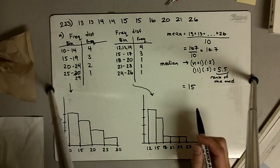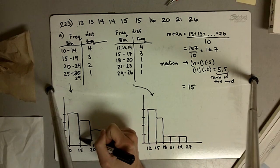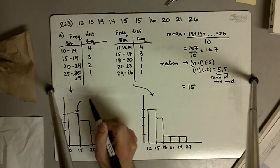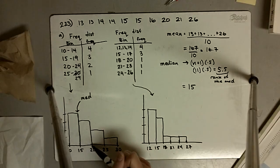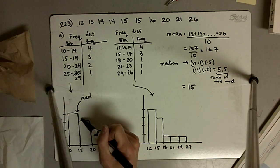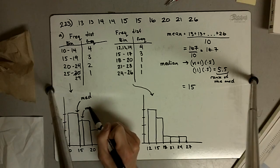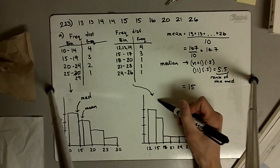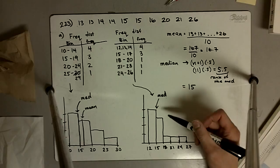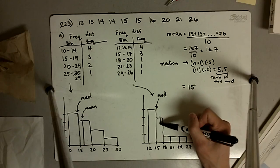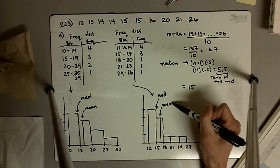It asks us to mark the locations of the mean and median on the histogram. The median of 15 is marked on the first histogram, and 16.7 — the mean — falls somewhere between 15 and 20, approximately right there. On the second histogram, the median is also marked at 15, and the mean of 16.7 falls somewhere between 15 and 18. That is problem 223.